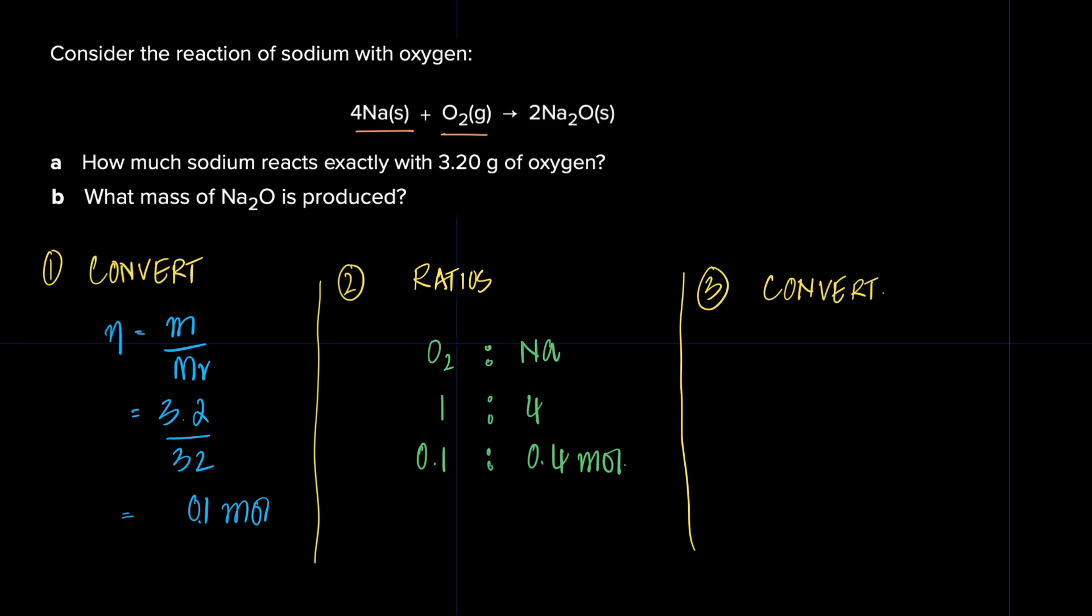So we know the moles of sodium now, I can figure out the mass of sodium, which is going to be the mass is moles times the MR, moles is 0.4 times the MR for sodium is 23. Answer comes down to 9.2 grams.